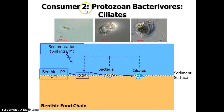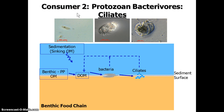The second level of consumers is pretty much the same as in the water column: protozoan bacterivores — guys that eat bacteria. In the benthos, it's primarily ciliates. There are some amoeba and flagellates, but ciliates are the big consumers. They do basically the same job as they do in the water column.